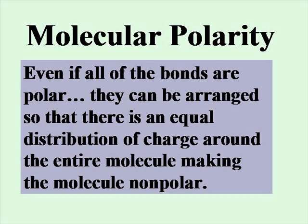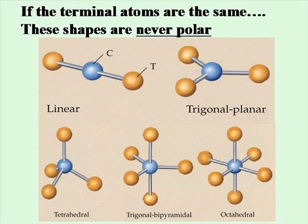Now let's talk about molecular polarity. Even if all of the bonds in a molecule are polar, those bonds can be arranged so that there's an equal distribution of charge around the entire molecule, making the molecule non-polar. So the bonds can be polar, but their arrangement can lead to a non-polar molecular structure. If the terminal atoms — the atoms at the end — are the same, then these particular molecular shapes will never be polar. Even though each bond to the central atom is polar, all of the arrangements of atoms around the central atom are uniform or symmetrical. So the total charge distribution is uniform — there's no positive end and no negative end. The entire molecule is considered non-polar.